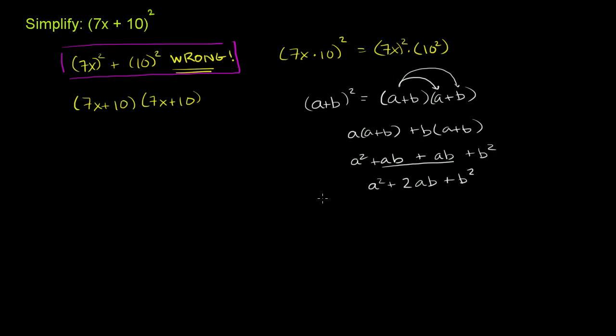So the pattern here, if I have a plus b squared, it's equal to a squared plus two times the product of these numbers plus b squared.